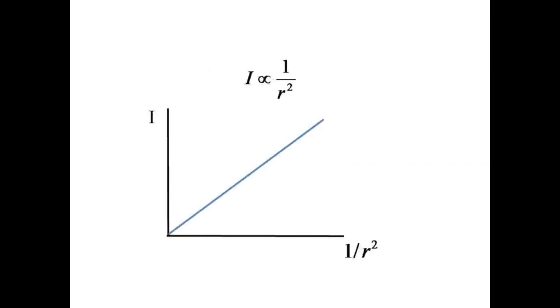A plot of intensity versus the inverse square of the distance is expected to yield a straight line.